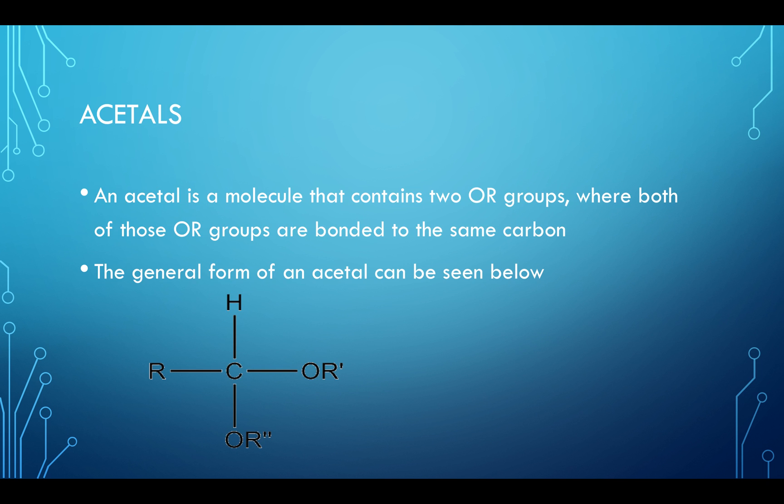An acetal is a molecule that contains two OR groups where both of these OR groups are bonded to the same carbon. The general form of an acetal can be seen below.